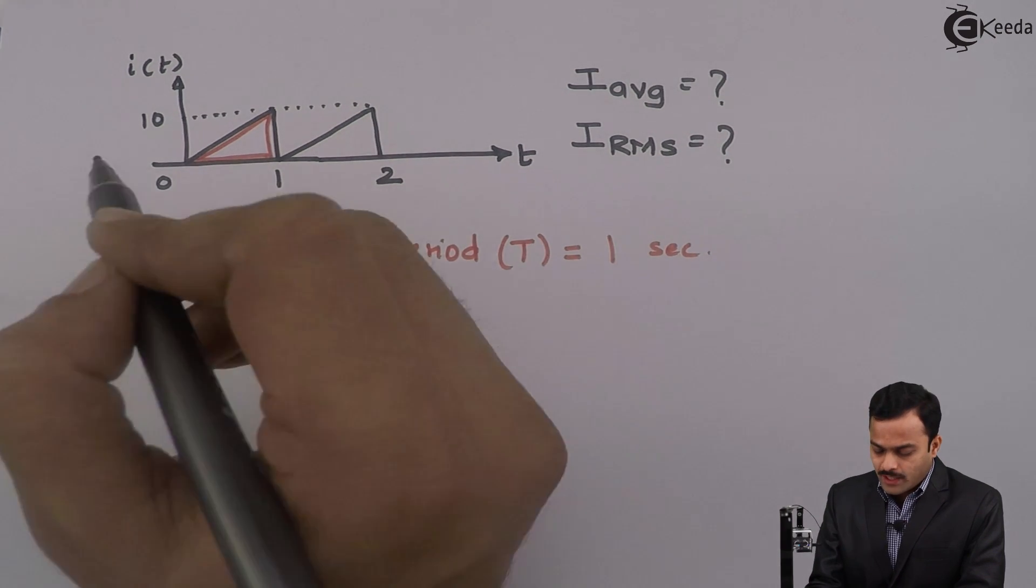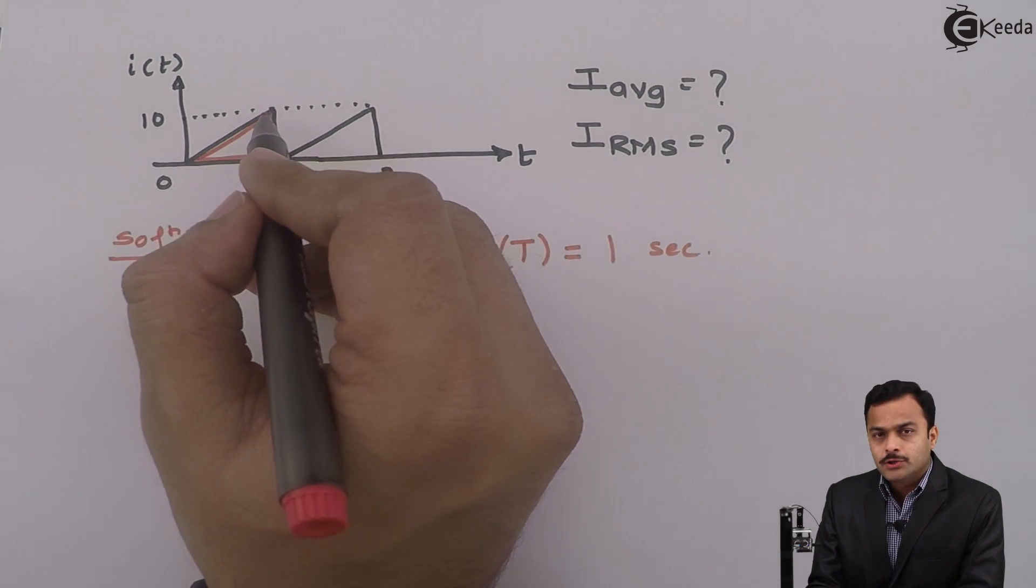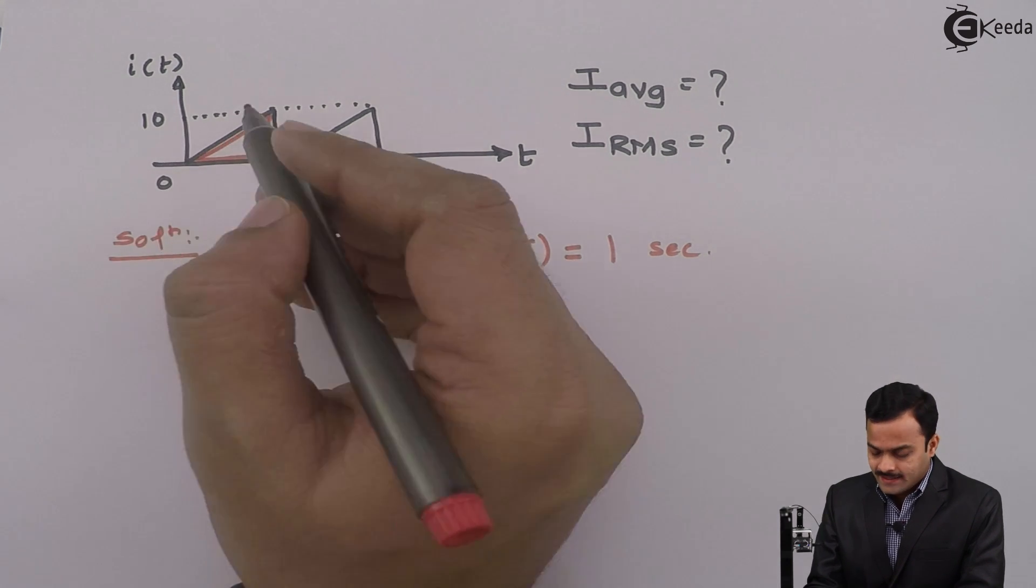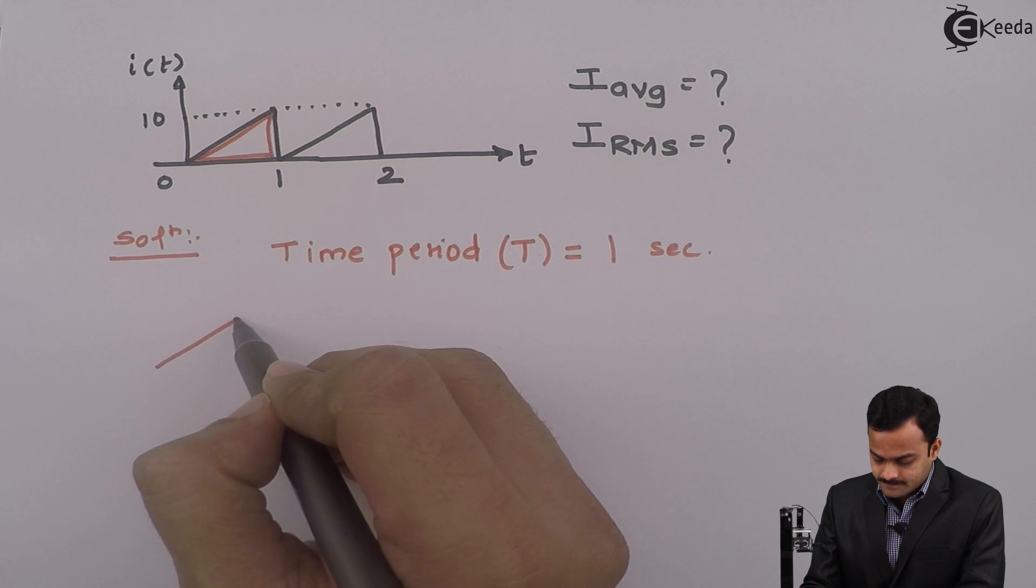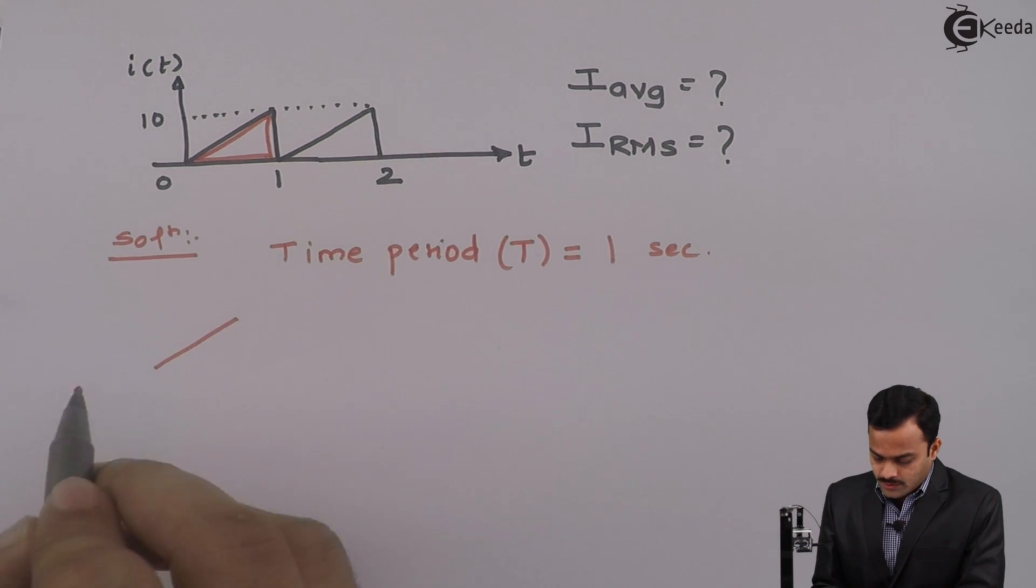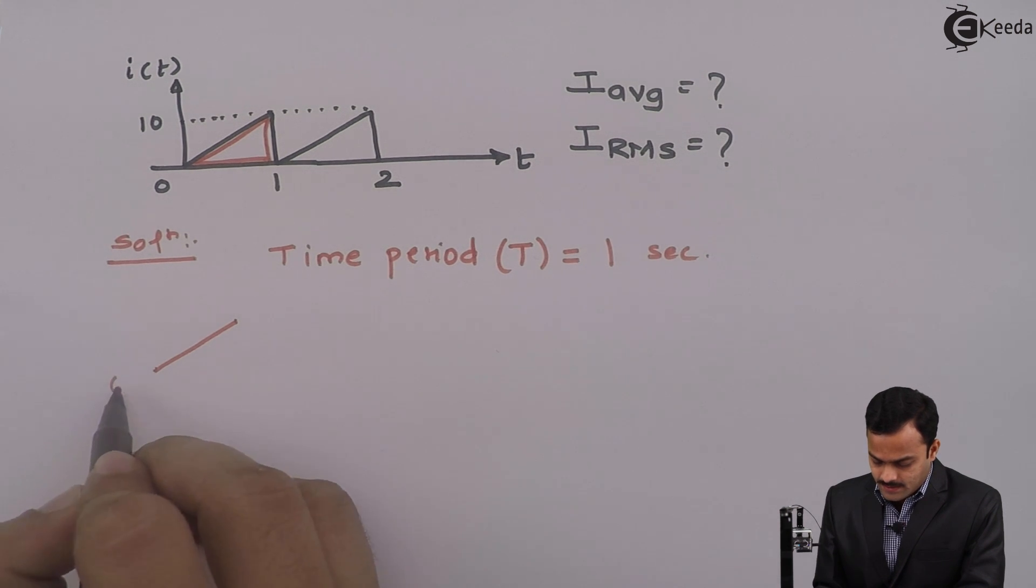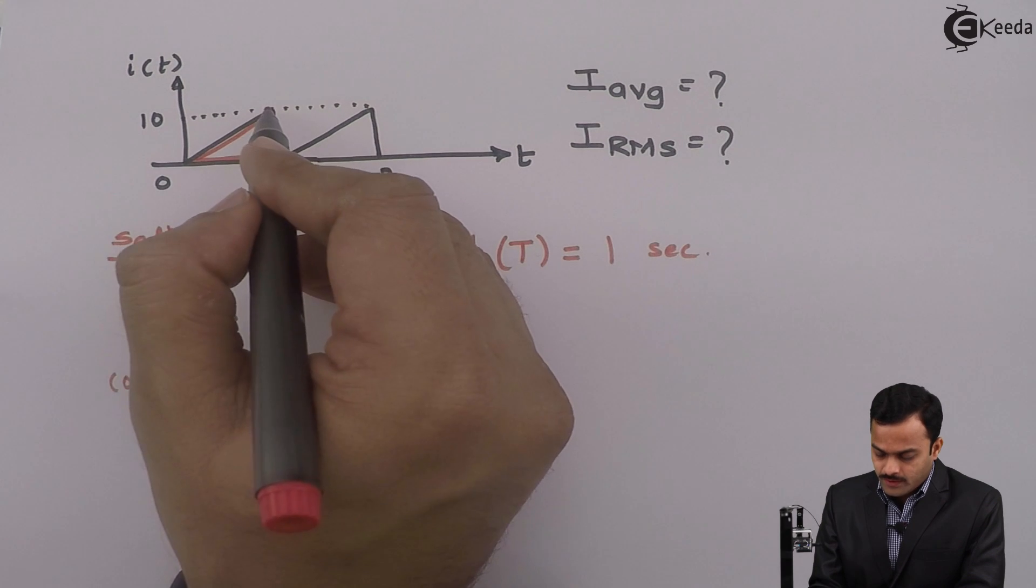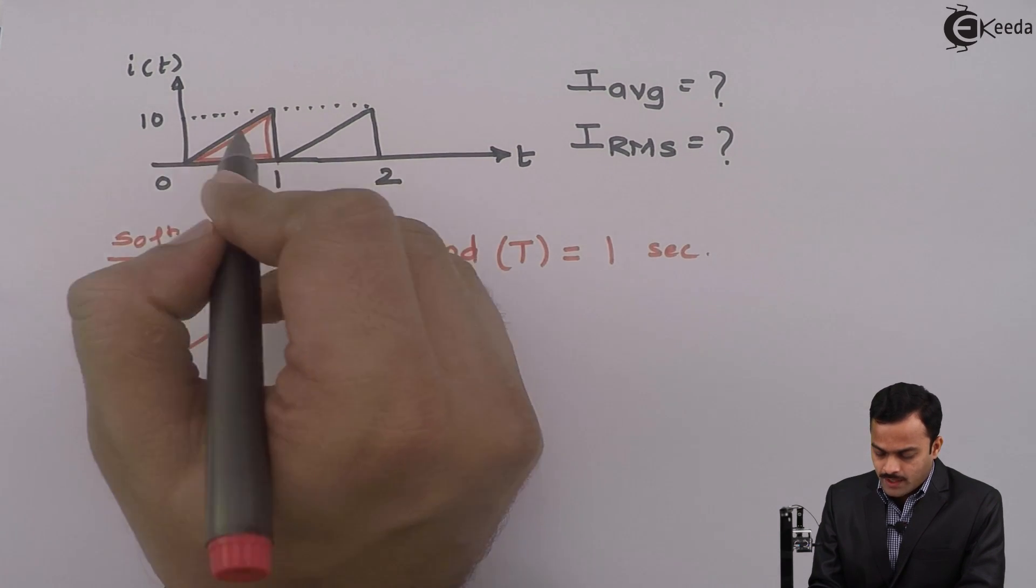Secondly, we have to write an equation of waveform during a time period. It is a simple straight line. The coordinates of these two points is (0,0) and for this point, it is (1,10).